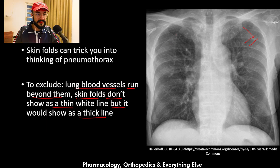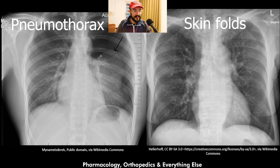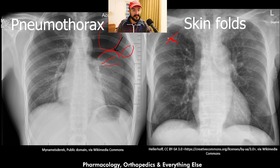As you can see, this skin fold line is quite thick. Comparing it to pneumothorax, the lung edge is a thin line while the skin fold is a thick line. In pneumothorax, you cannot see any lung markings beyond the lung edge — the area is black. But beyond a skin fold, there are lung markings visible on both sides of the line.